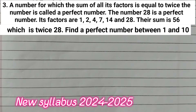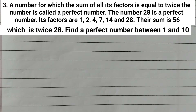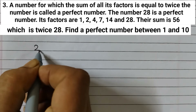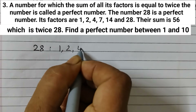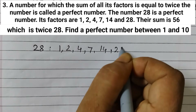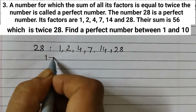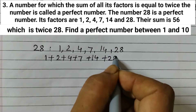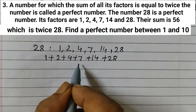The next question: a number for which the sum of all its factors is equal to twice the number is called a perfect number. The number 28 is a perfect number. Its factors are 1, 2, 4, 7, 14, and 28. We need to find a perfect number between 1 and 10. The factors of 28 are 1, 2, 4, 7, 14, and 28.